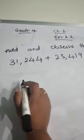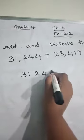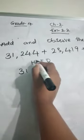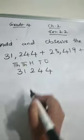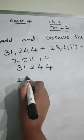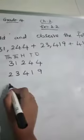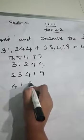31,244. So 1s, 10s, 100, 1000, 10,000. So next 23,419. And next, what is the next number? 41,695.